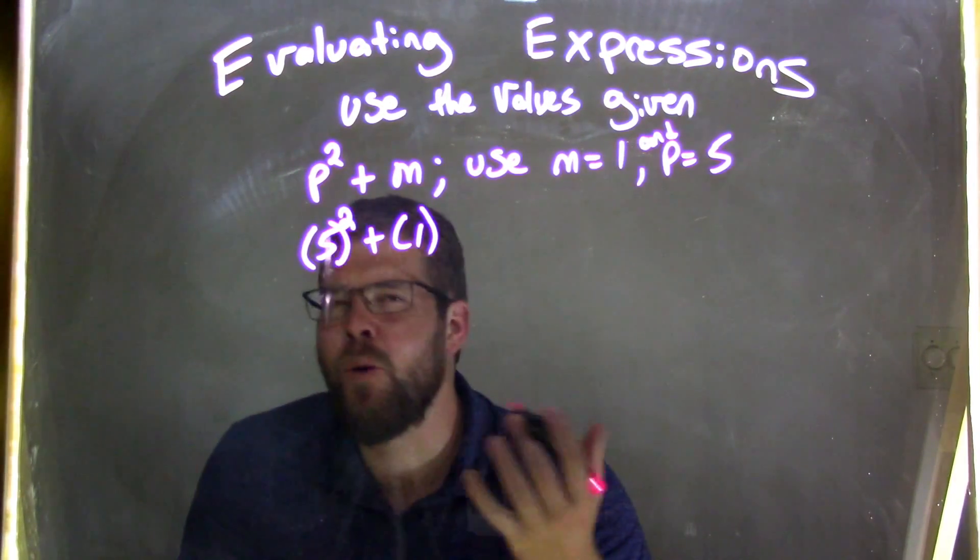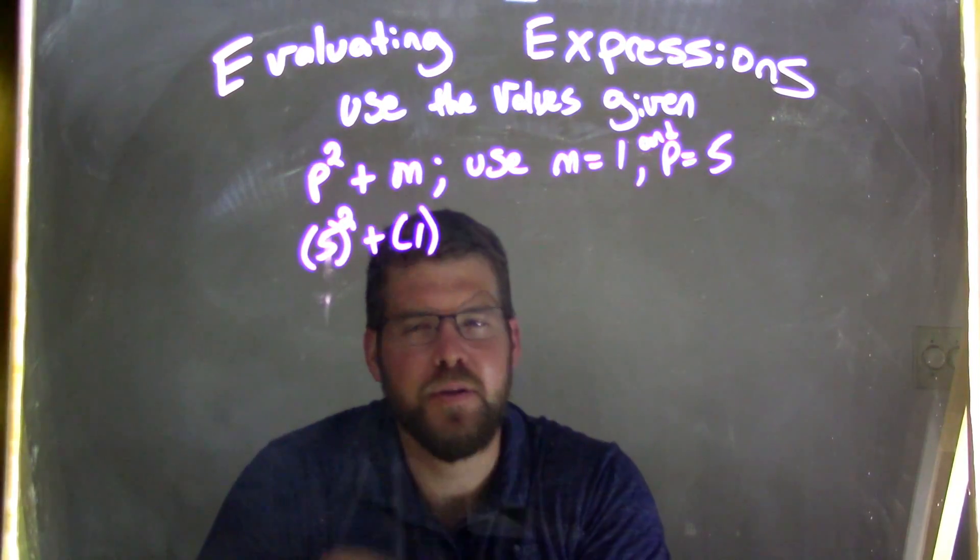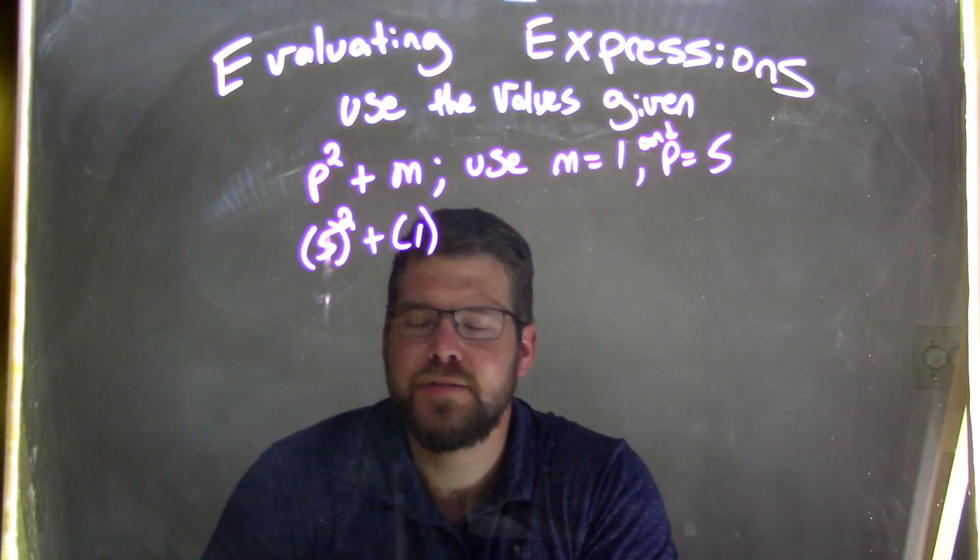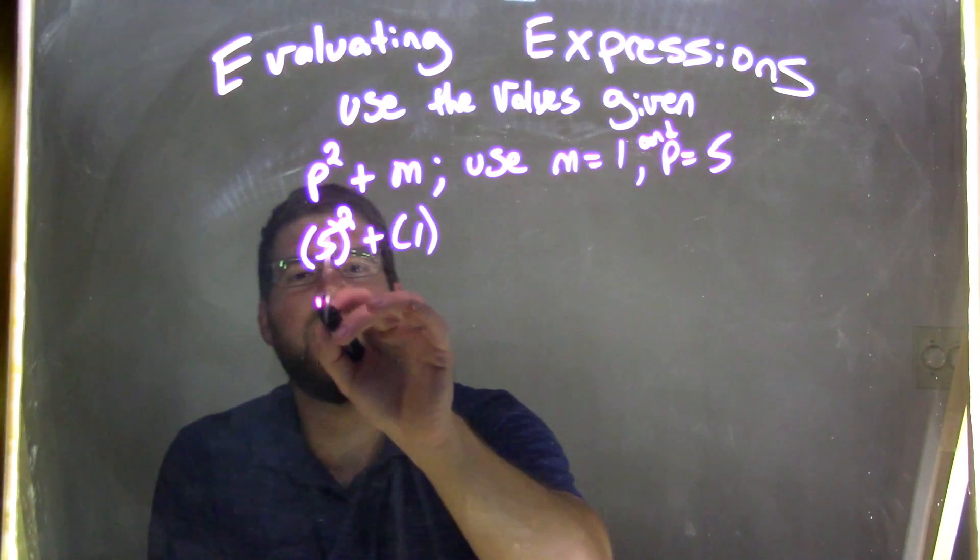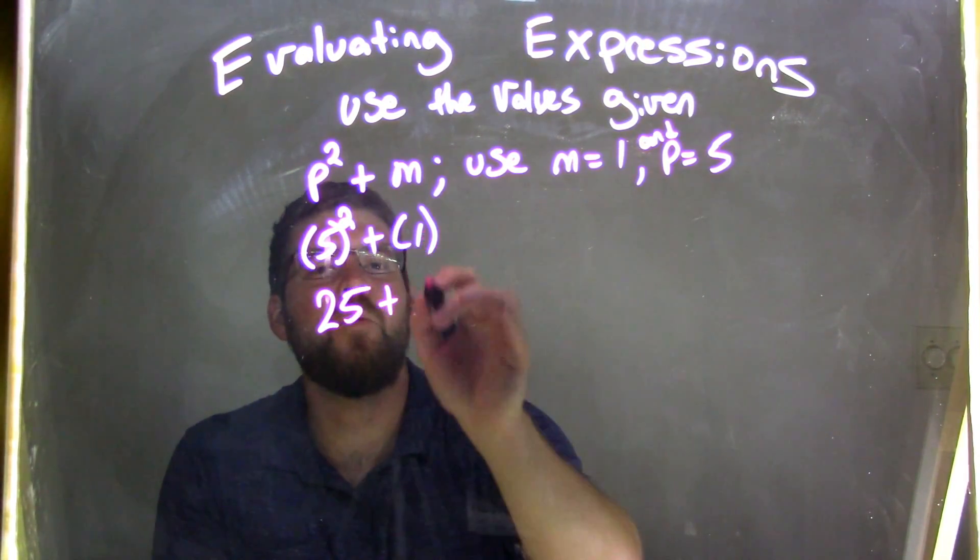Right now you're wondering, well, why do I have the parentheses? It will come into play later, and it's important to think about. So 5 squared comes out to be 25, and 1 is just 1.